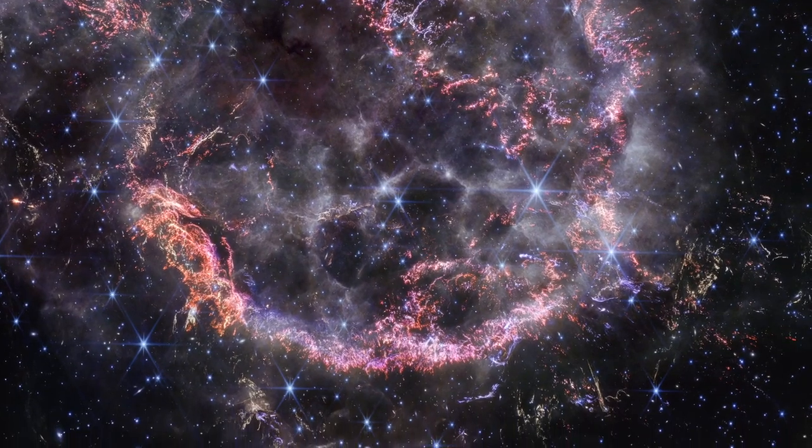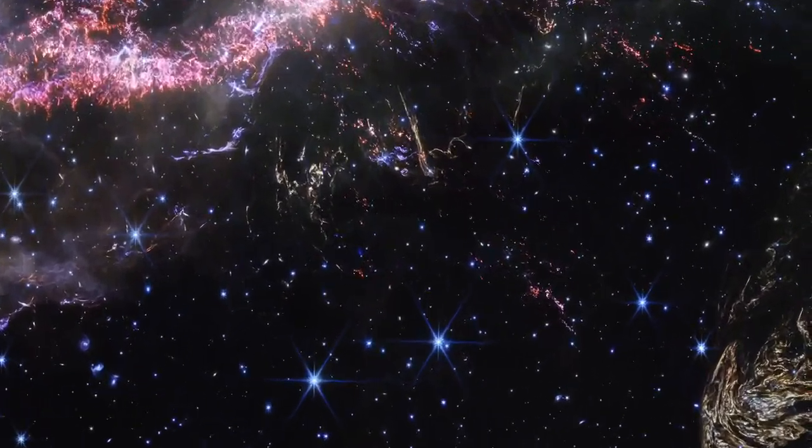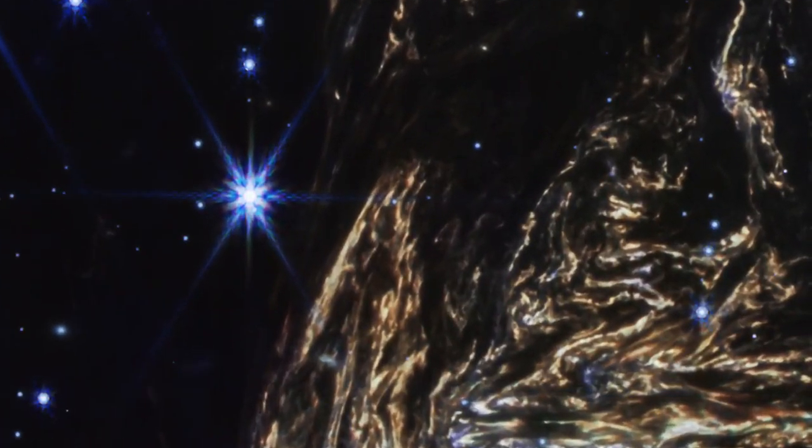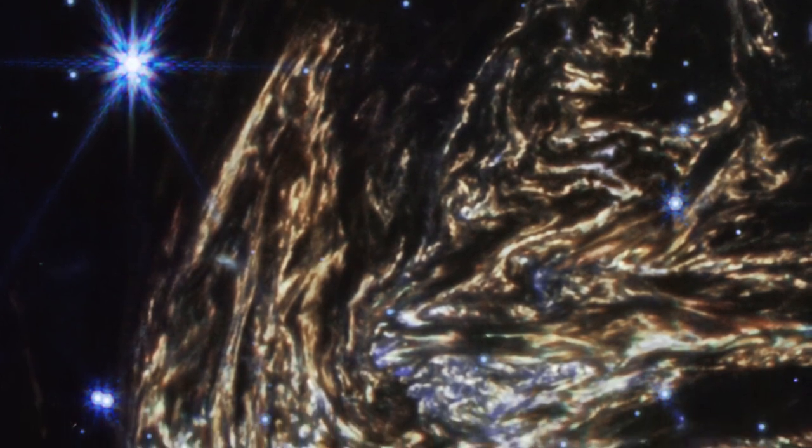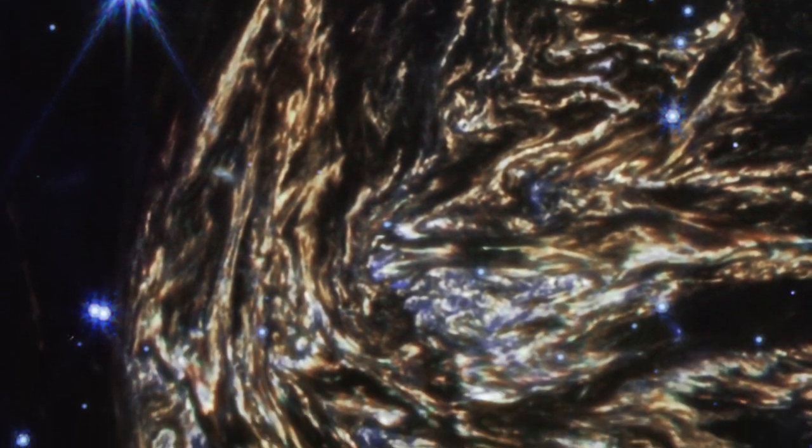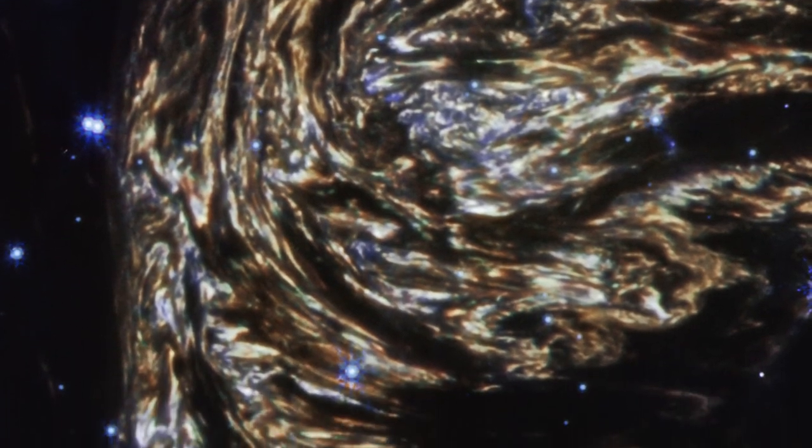Finally, we visit a particular light echo from an area filled with intricate dust patterns. Nicknamed Baby Cass A because of its proximity and connection to the large supernova, Baby Cass A appears to be nearby but is actually located 170 light-years behind the supernova remnant.